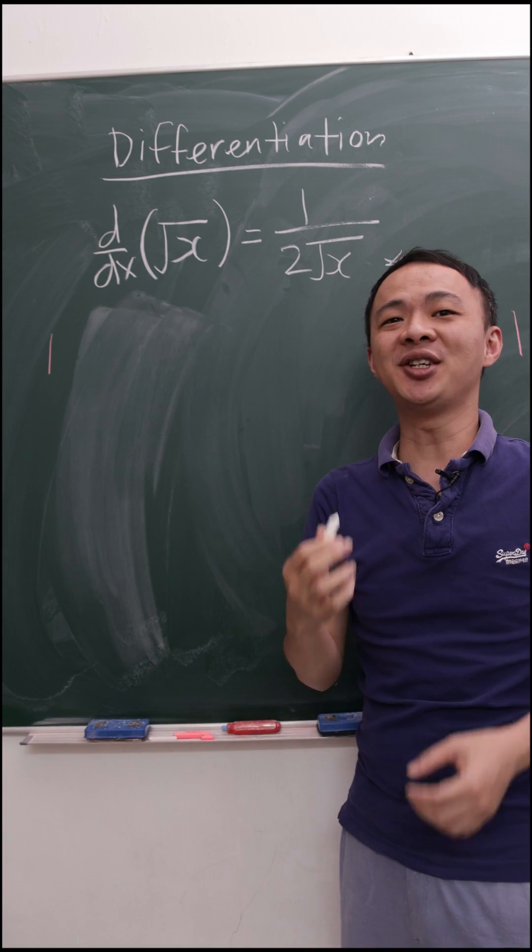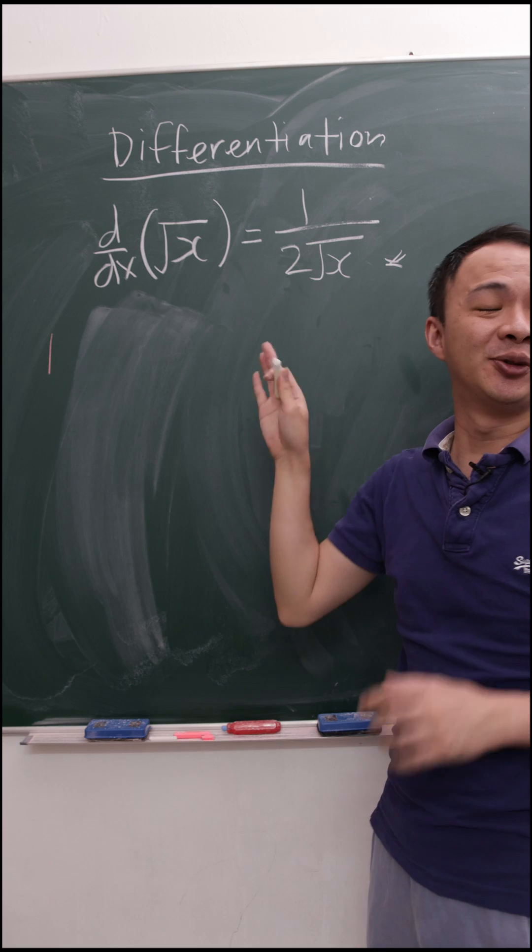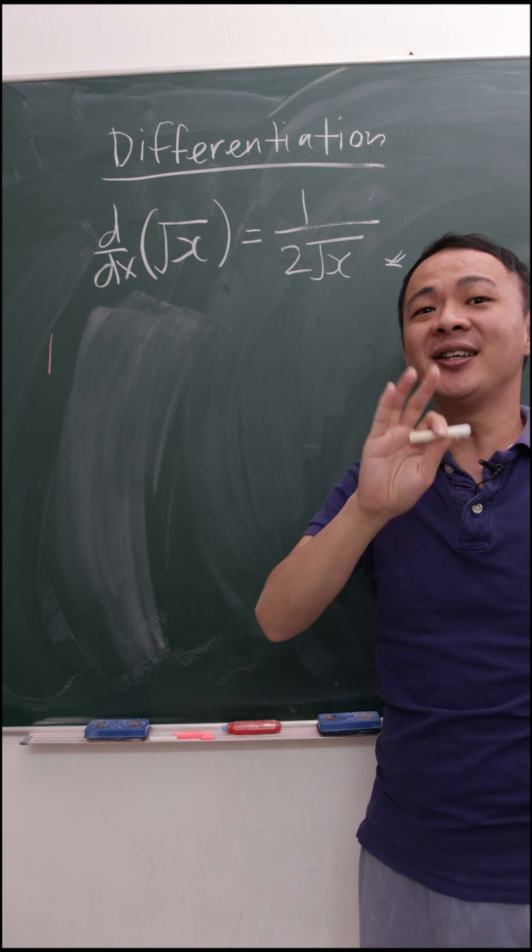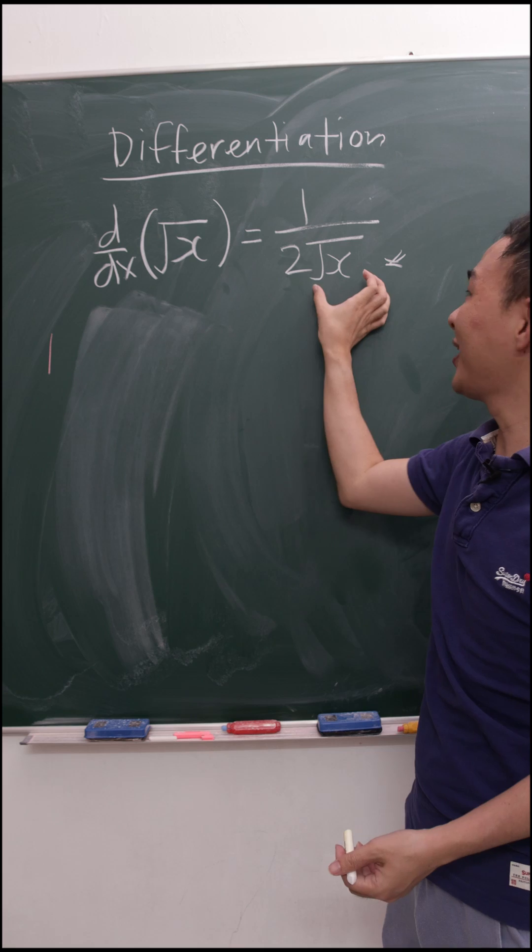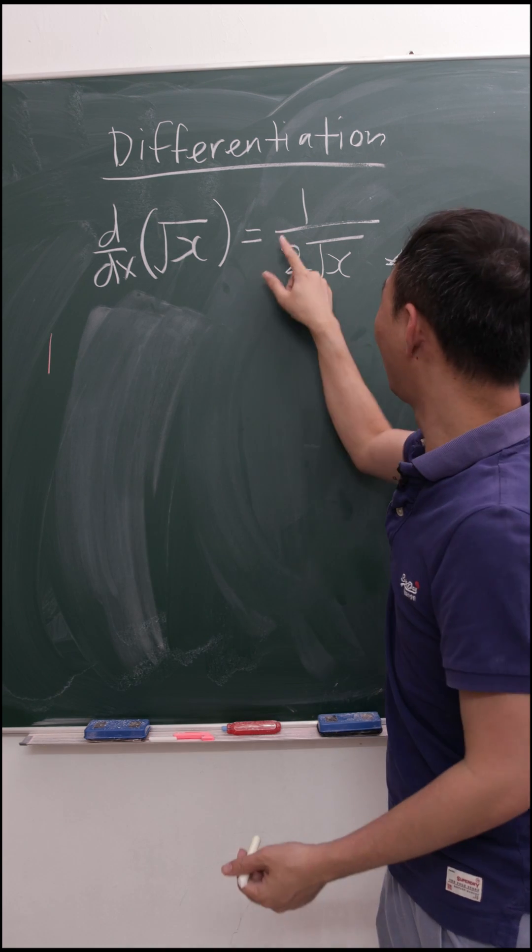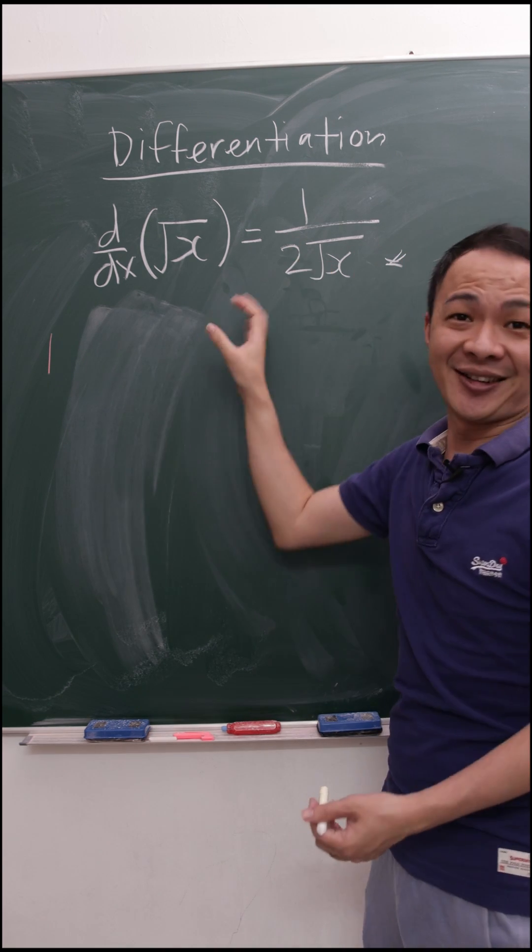If you want me to teach you the technique to get this one real quick, the easiest way is whenever you differentiate square root x, the square root x always stays at the denominator and you always need to add a 2 in front of the square root x.